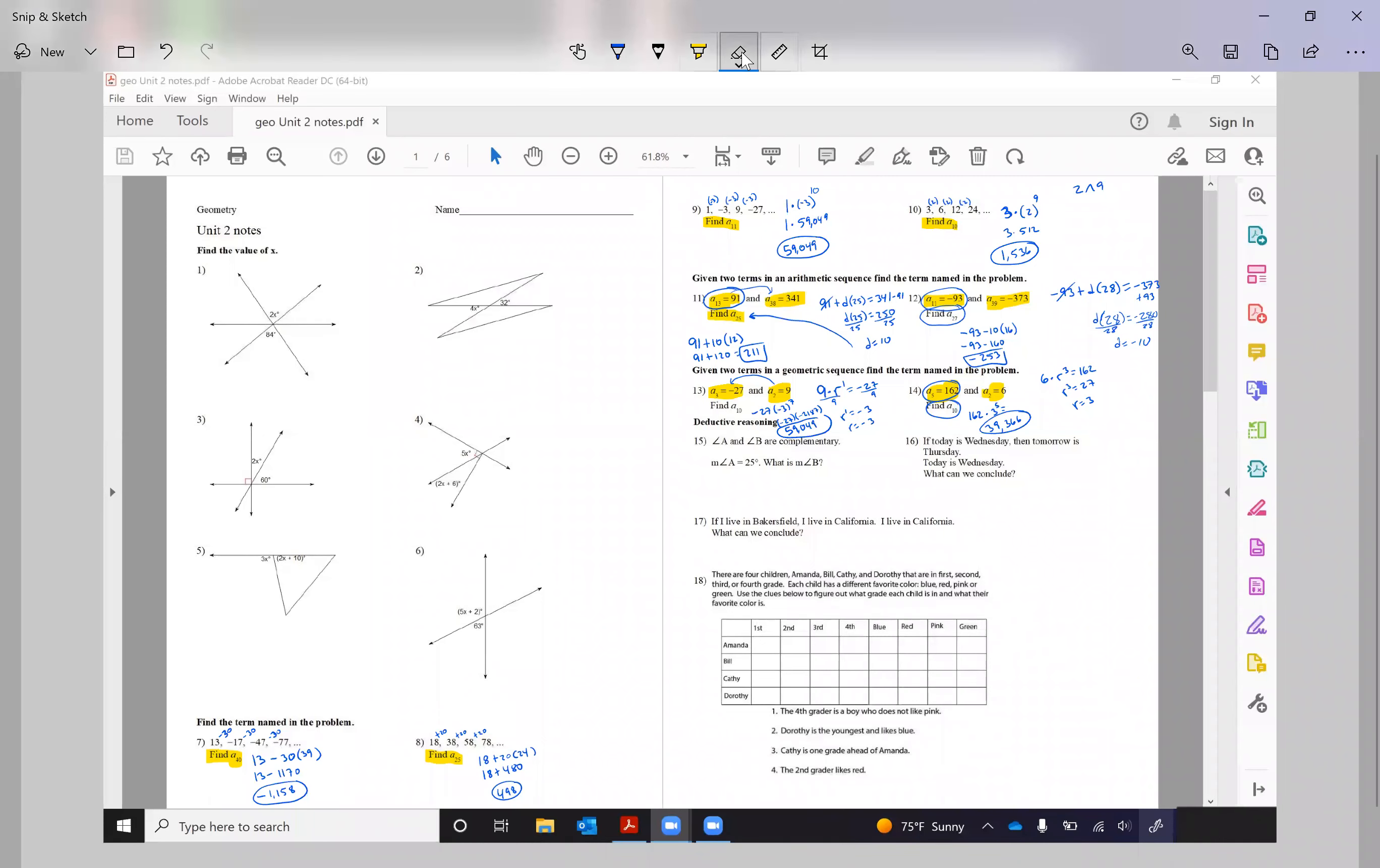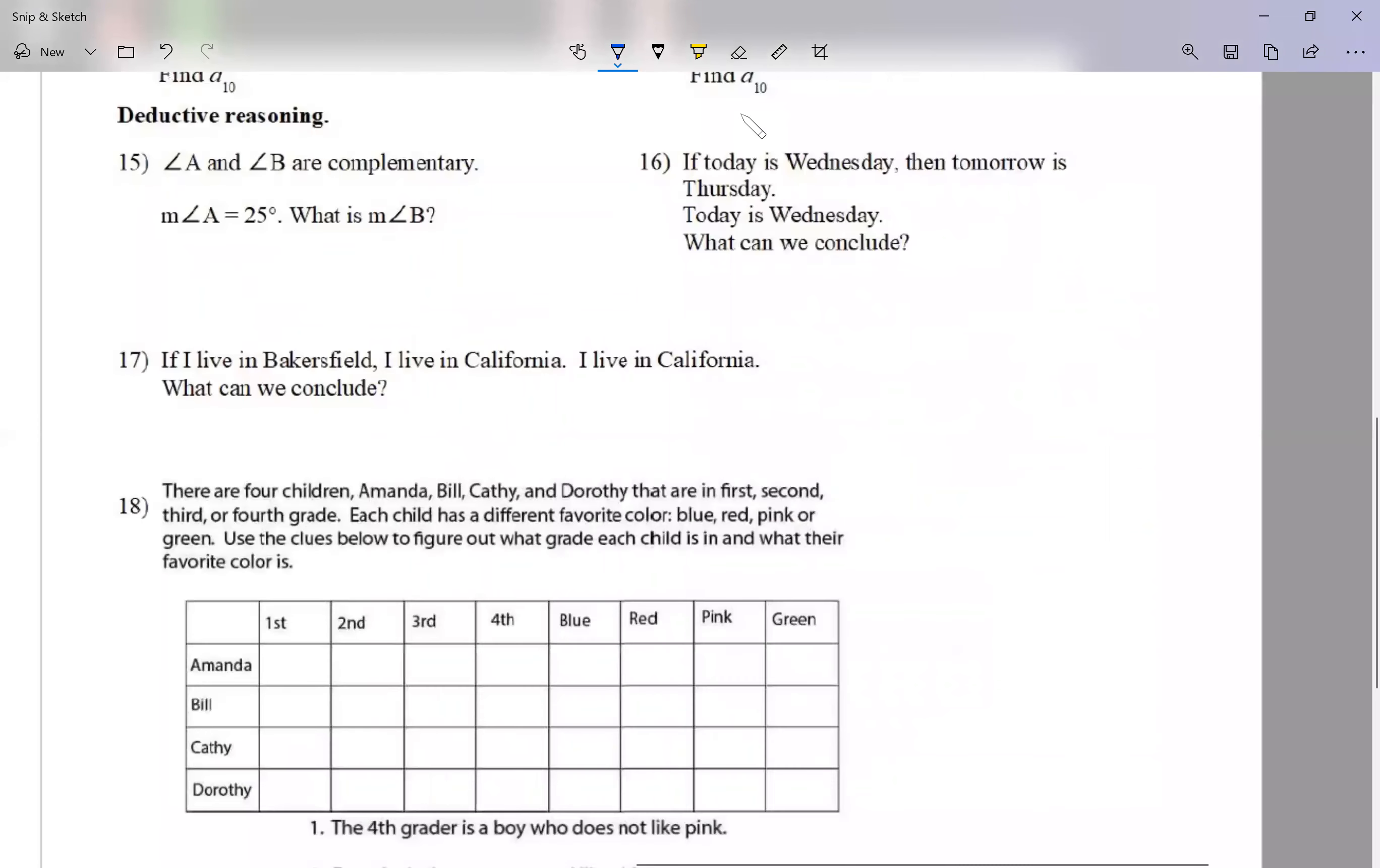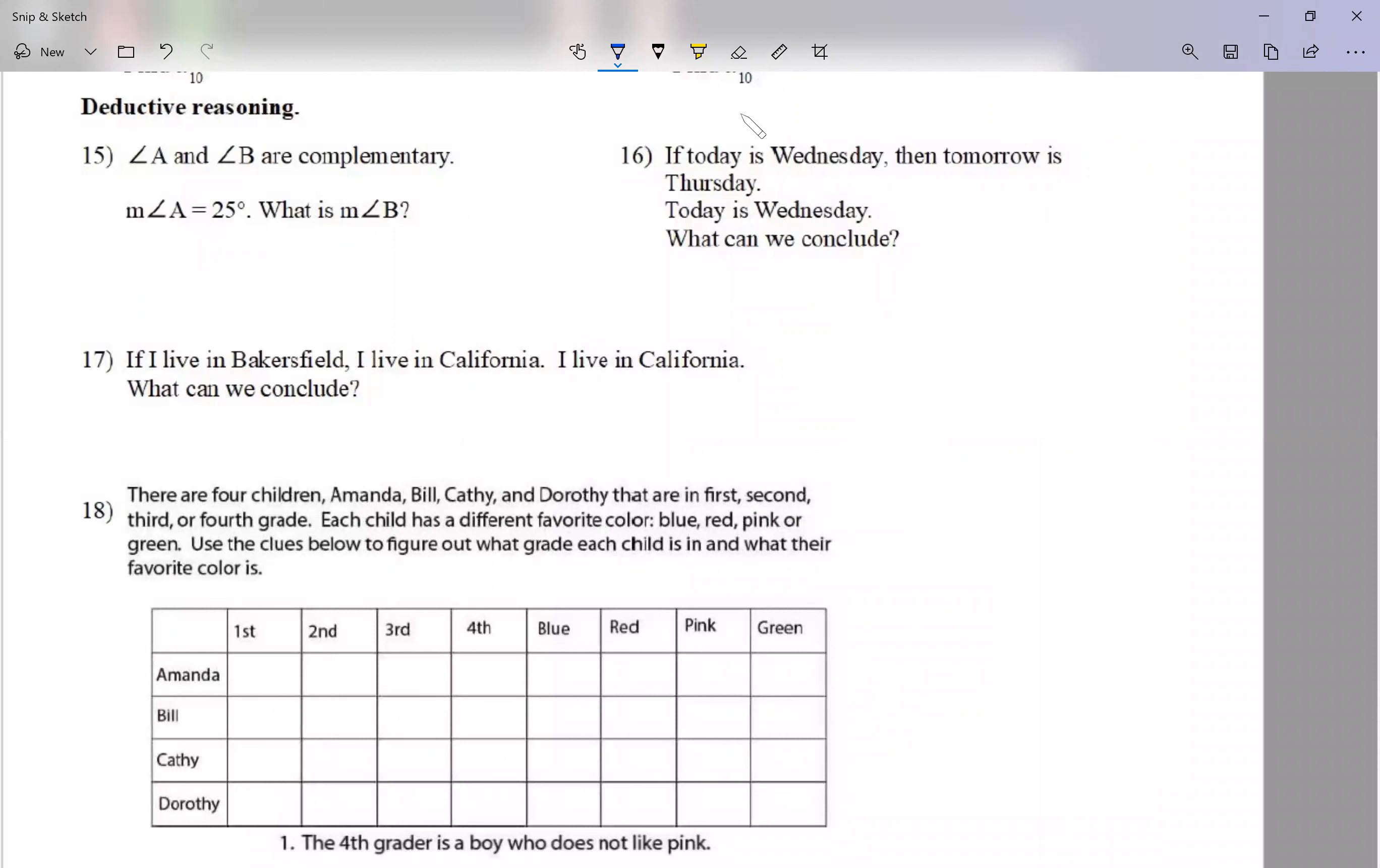All right, so now let's actually move on. Let's move on 15 through 18. We're going to be looking at deductive reasoning. Yesterday we talked about inductive, today we're going to talk about deductive. Now deductive is basically what lawyers do. A lawyer cannot use inductive. Inductive was yesterday, like three patterns. A lawyer cannot show up...